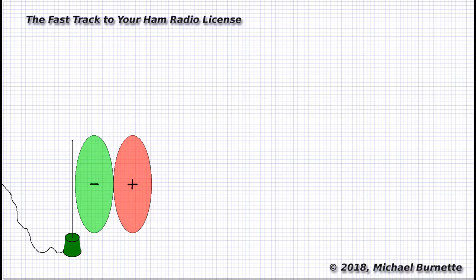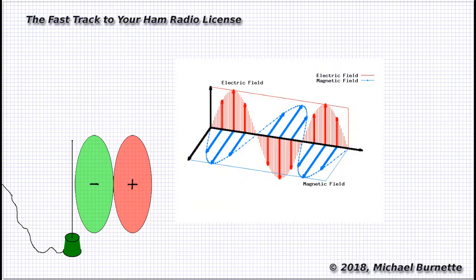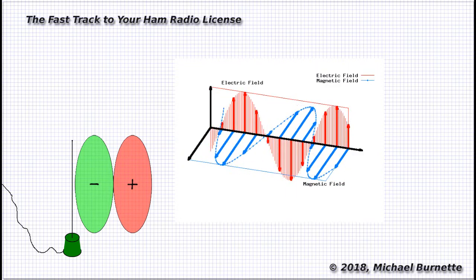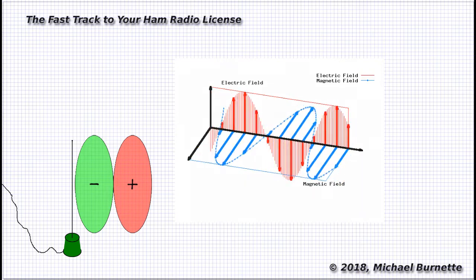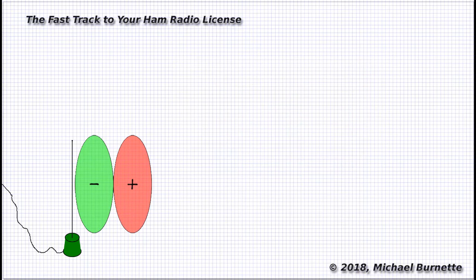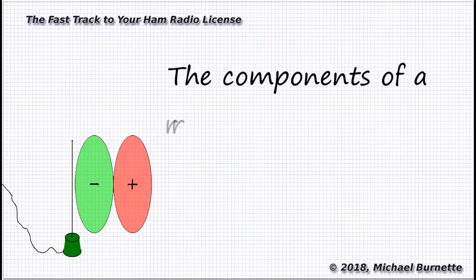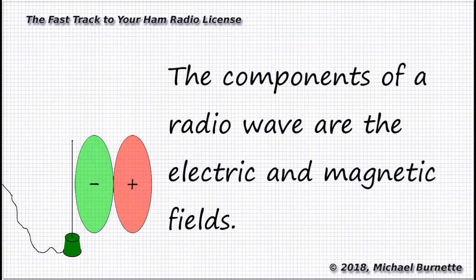Now, traveling right along with those electric charges are a couple of lumps of magnetic charge. But we don't really use those for much. Mostly, we're interested in the electrical charge. But the wave is called electromagnetic because it has both of those components.